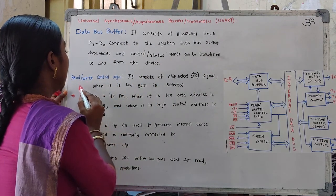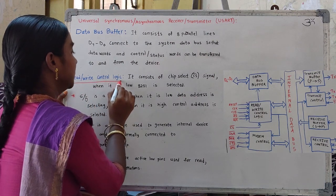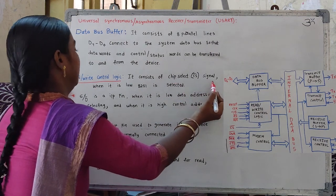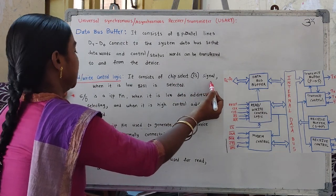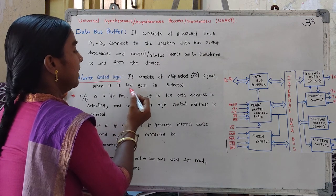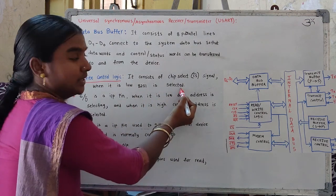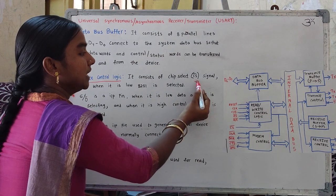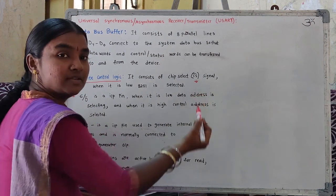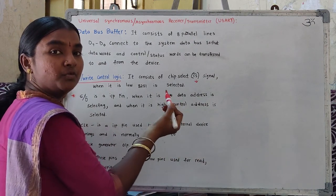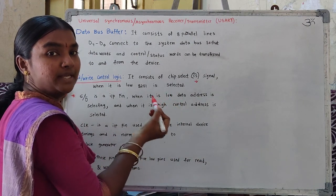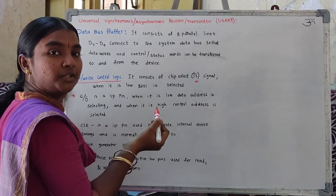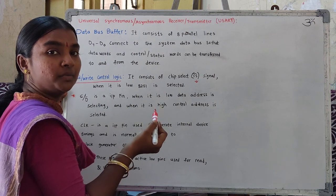The second block is read and write control logic. It consists of a chip select signal, which is an active low signal. When it is low, the 8251A is selected. When we receive logic 0 on this pin, the 8251A USART is selected. If we receive logic 1 on this pin, the 8251A USART will not be working.